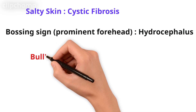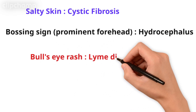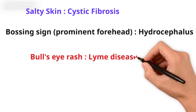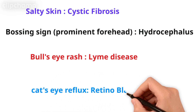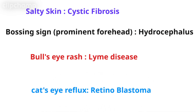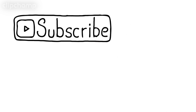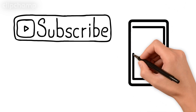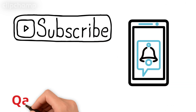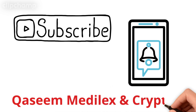Salty skin if you feel it is cystic fibrosis. Bossing sign is actually a prominent forehead — it is hydrocephalus. Bullseye rash is Lyme disease. Cat's eye reflex is retinoblastoma. Thank you very much. If you like my video, please subscribe to the channel and share it with other medical students for sharp and creative knowledge.